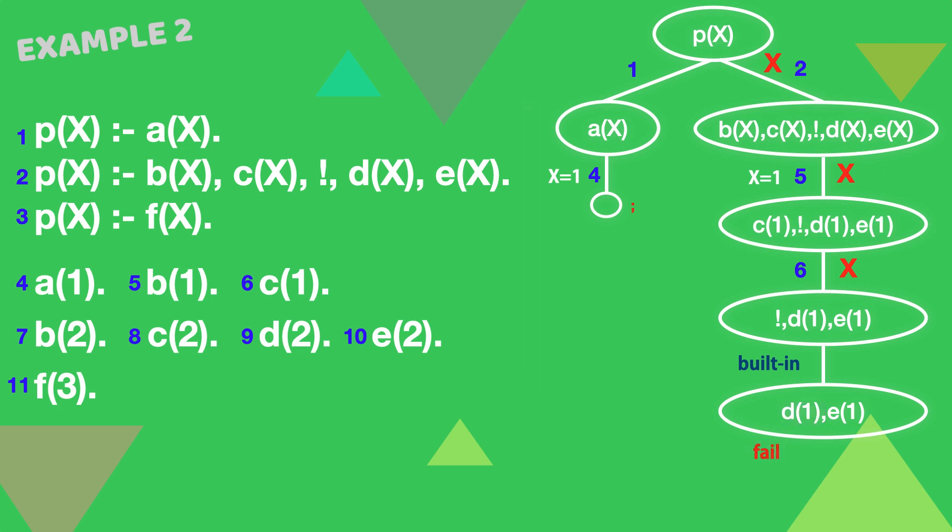We can't try x equals 2, because the cut has fixed the choice of x equals 1. And we can't try the third rule in clause 3, because the cut has also fixed clause 2 as the choice for solving p(X).